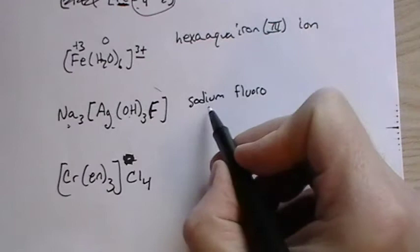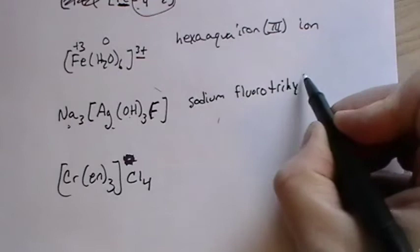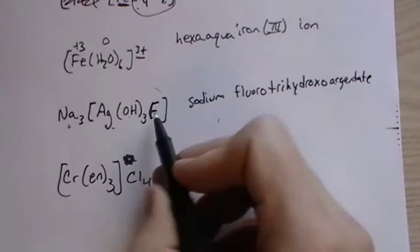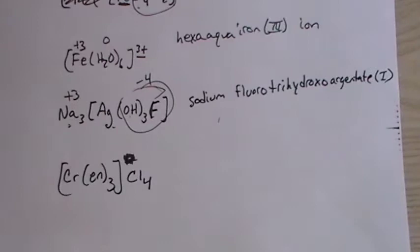Fluorine and hydroxyl, so this would be fluoro. We're going to separate the name just like we would for sodium chloride. The anion and the cation are separated. So sodium, fluoro, trihydroxo, argentate, and then we have three, four. So this is going to be a plus three total here. This is a minus four, so that means that the argentate is one.